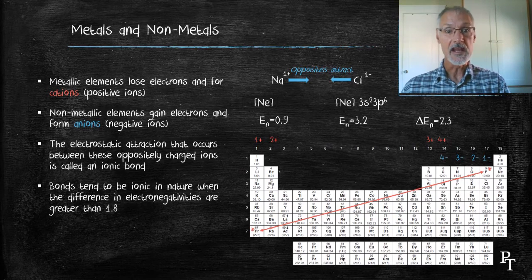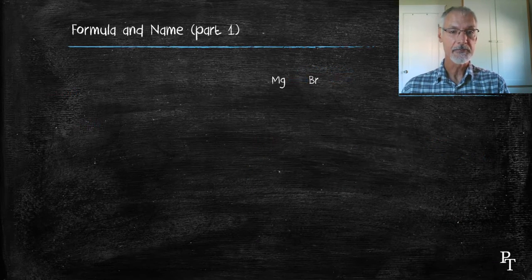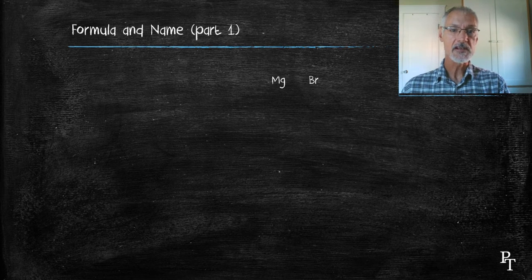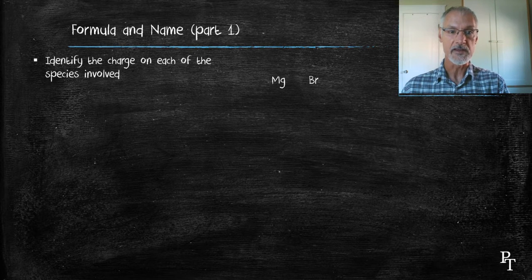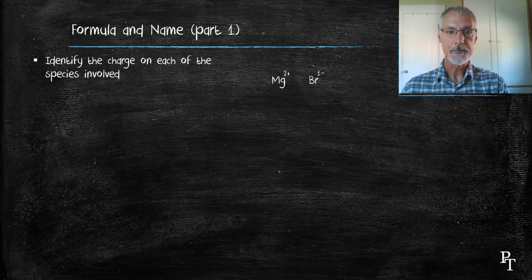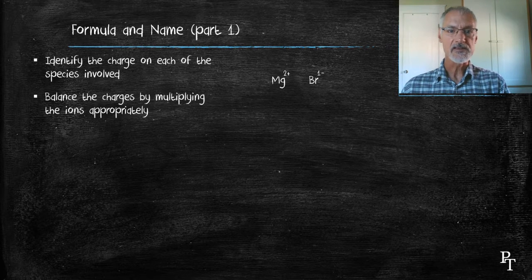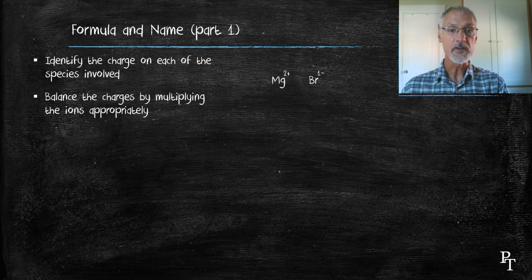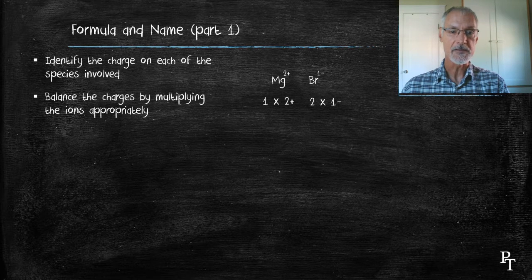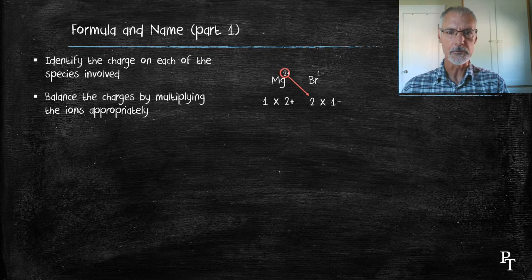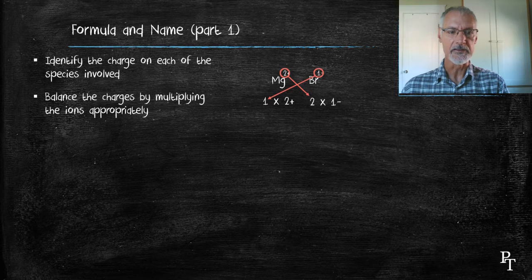Let's look at naming and formulas of ionic compounds. Here I'll start with magnesium with bromine. The first thing I do is identify the most common charge developed by these species: magnesium 2+, bromine 1-. The next step is to balance the charges, meaning the pluses and negatives must balance. That requires the presence of two bromines to balance the charge of the magnesium.